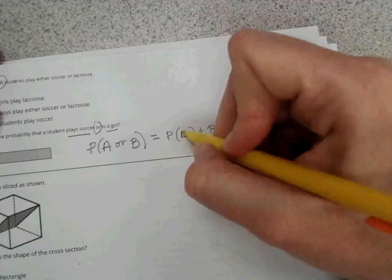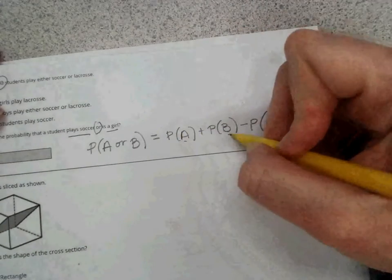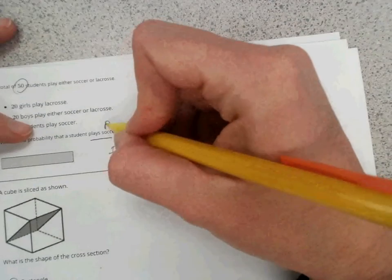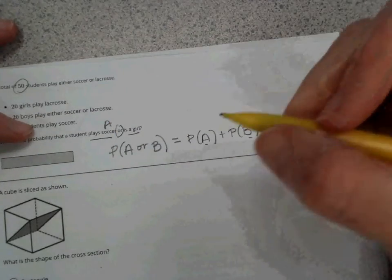So where A is an event and B is an event, we can define what event A is - that would be playing soccer, and then event B you could call being a girl.